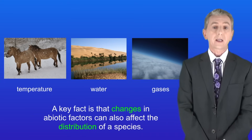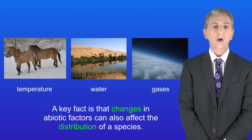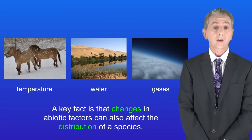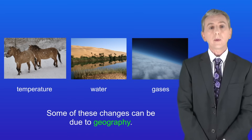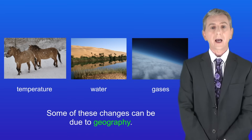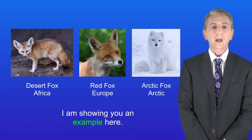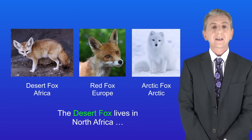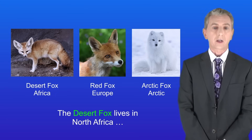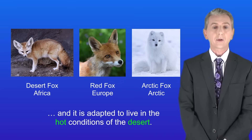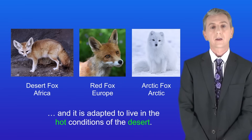A key fact is that changes in abiotic factors can also affect the distribution of a species, and some of these changes can be due to geography. The desert fox, shown here, lives in North Africa and is adapted to live in the hot conditions of the desert.